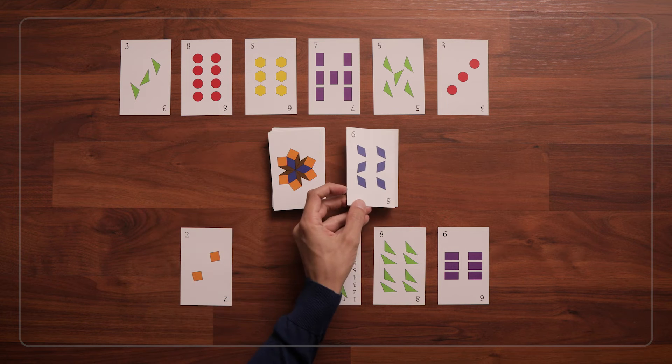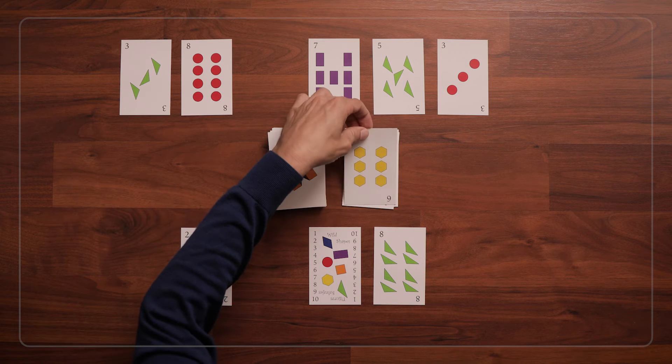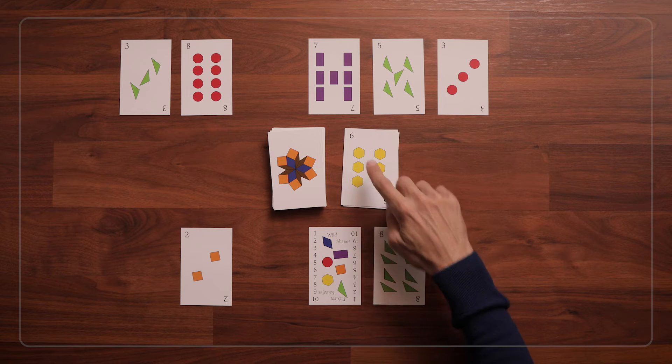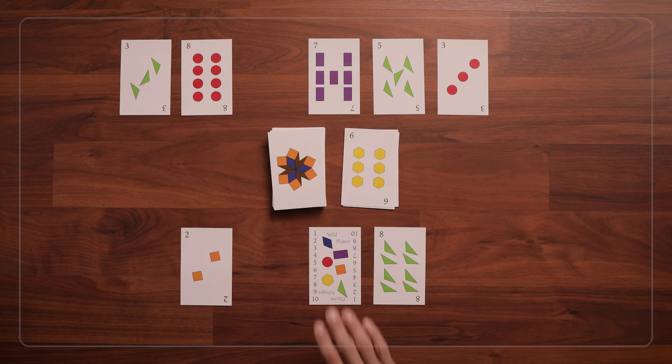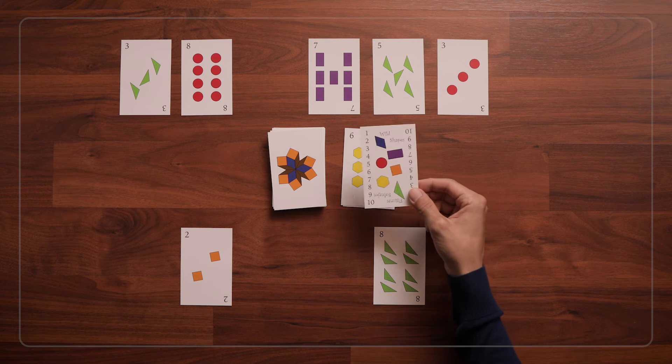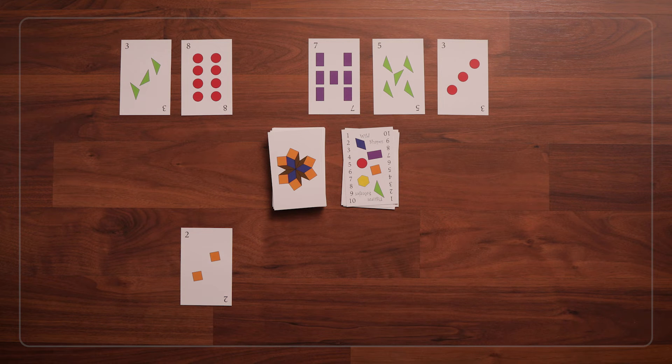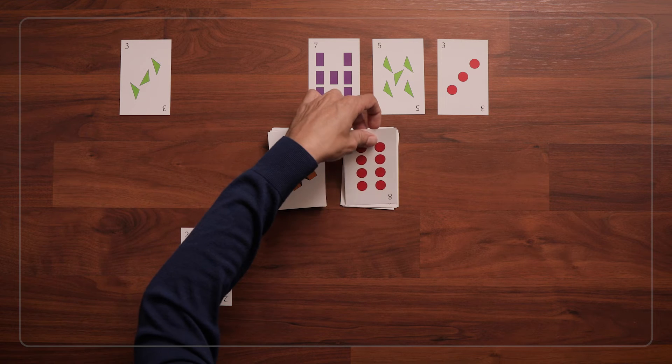The other thing a player can do on their turn is use a wild shape card to change the shape to one of their choosing. So if I need to match this 6 hexagon card, and I don't have any 6s or hexagons, I can play my wild shape card and say I'm changing the shape to triangles. And then I can play my 8 triangle card. Now the next player has to either play an 8 card or a triangle card.